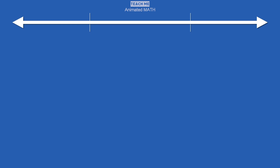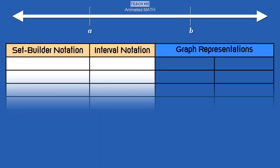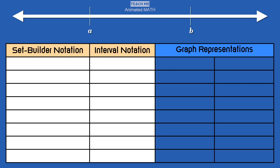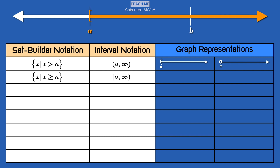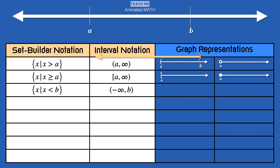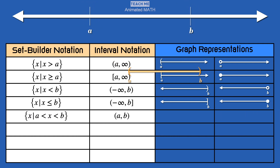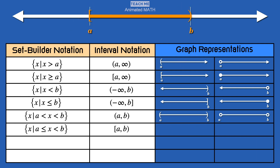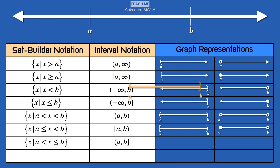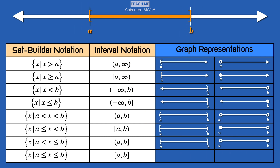Here are the different ways to represent intervals using set builder notation and interval notation, along with their graph representations. Intervals can be graphed using an open dot for endpoints that are not included and a closed dot for endpoints that are included. Negative infinity and positive infinity are not numbers — they just mean the set continues without an end. Points using the infinity symbol always use parentheses because we can't reach infinity.